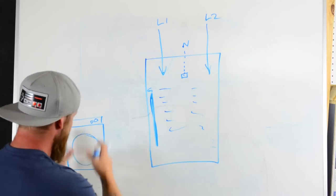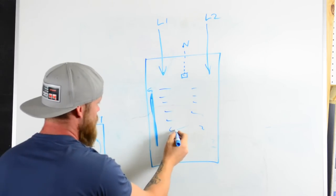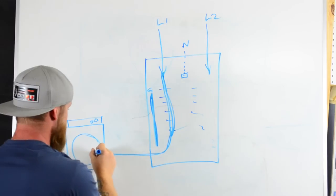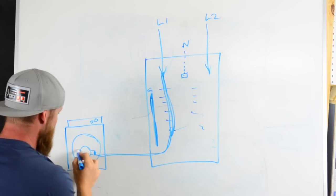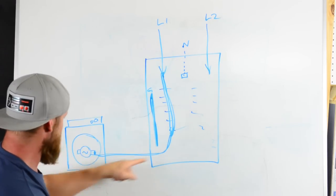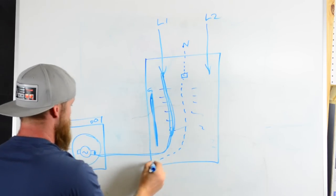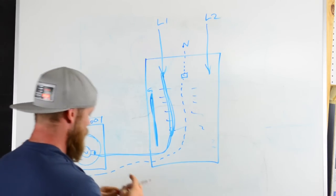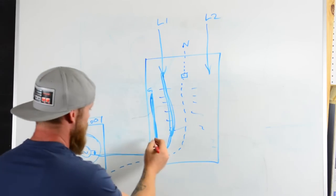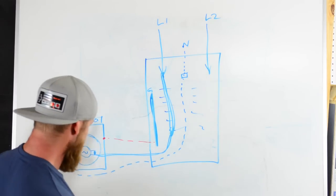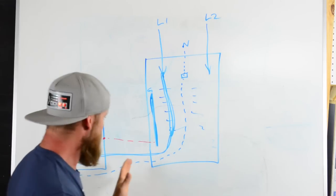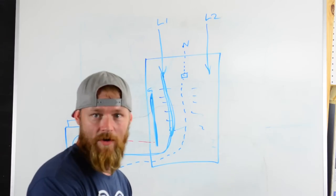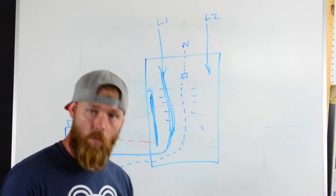Say we have a washing machine, a front load washing machine because we're fancy rich people. So the washing machine, what we do is we run from one of these breakers a hot over to this motor. The motor is the load. We run a hot to one side of our motor, we run our neutral to the other side of the motor, and then we run an equipment grounding conductor or ground to the casing, to the metal casing of this whole appliance.